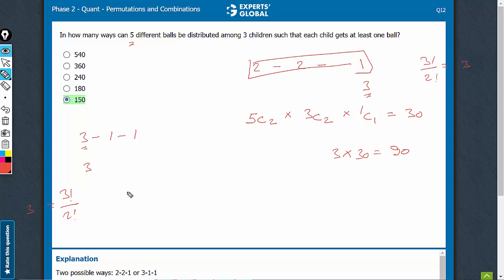In this case, same thing. 3 can be given in 5C3 ways. 2 remain. So, 2C1. And now, one that remains goes in 1C1 way or simply one way. 5C3 is 10 into 2 is 20. And remember, 3 earlier.